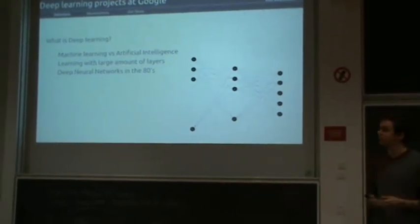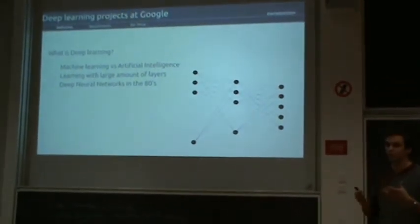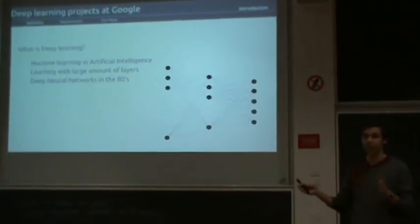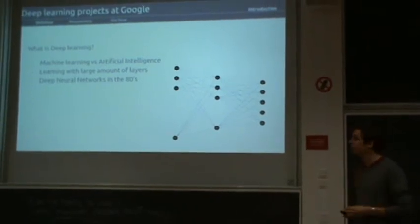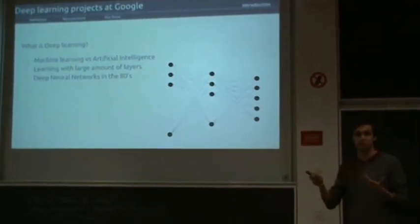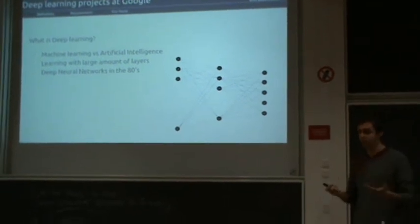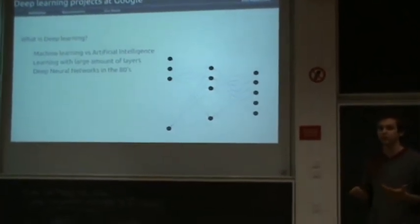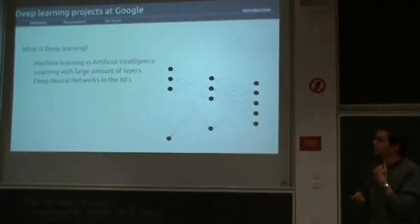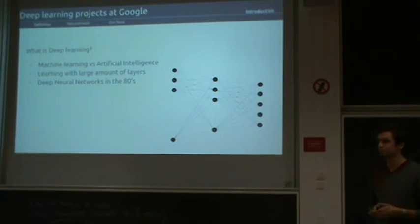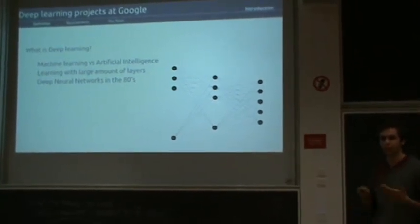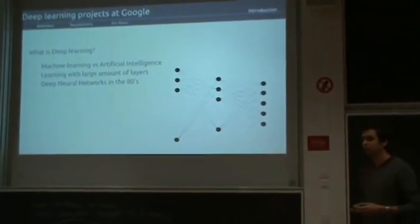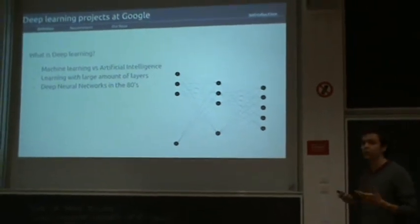But what makes deep learning different? In most cases, you're looking at an artificial neural network with a large amount of layers. The amount of layers is basically the depth of the network, and there comes the name deep learning. A bigger, deeper network can learn more complex structures and patterns. This is not really a new concept - it's basically a renaming or rebranding of something that was around in the 80s already called deep neural networks, which at the time was more or less science fiction. You couldn't really implement it with the technology at the time.